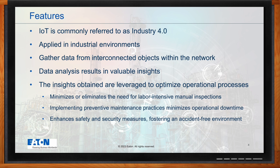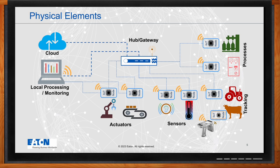IIoT refers to a system of interconnected devices that gather and analyze data, enabling intelligent control of machines and environments within an industrial setting. From a physical perspective, IoT comprises sensors, actuators, computers, servers, and communication links that work together to enable data collection, remote control, and seamless connectivity. Communication links play a critical role in IoT, serving as the conduit for data transmission between devices — they can be either wired or wireless.